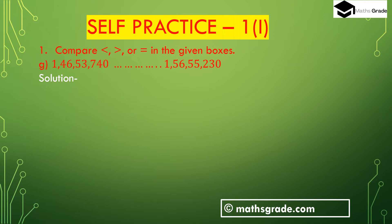Part (f): 1,46,53,740 and 1,56,55,230. Compare the highest place value digit: both have 1 in the crore place. Then compare the 10-lakh place: 1,46,53,740 has 4 and 1,56,55,230 has 5. Since 4 is less than 5, therefore 1,46,53,740 is less than 1,56,55,230.